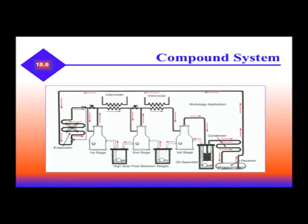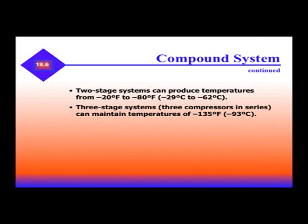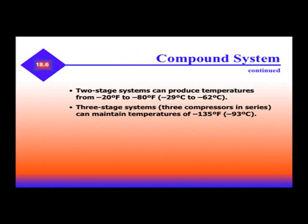This is an example of a compound system. The difference between the compound and the cascade is that in the cascade, we can use two different refrigerants, while in a compound system we can only use a single refrigerant. Two-stage systems can produce temperatures from negative 20 to negative 80 degrees, and three-stage systems can go down to negative 135 degrees.